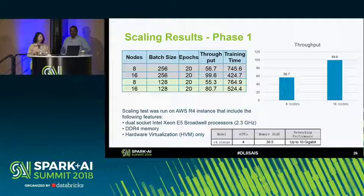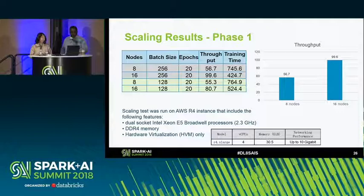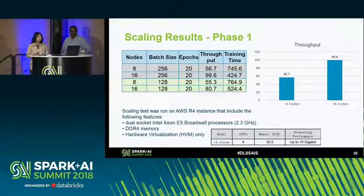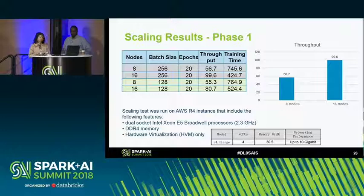We also conducted a scaling test of BigDL on the AWS Databricks cluster using AWS R4 instances. We tested with an eight-node cluster and a six-node cluster, training with the same batch size and number of epochs. The diagram shows that as the number of nodes increases, throughput increases nearly linearly — demonstrating that BigDL has good scalability in a cluster environment.